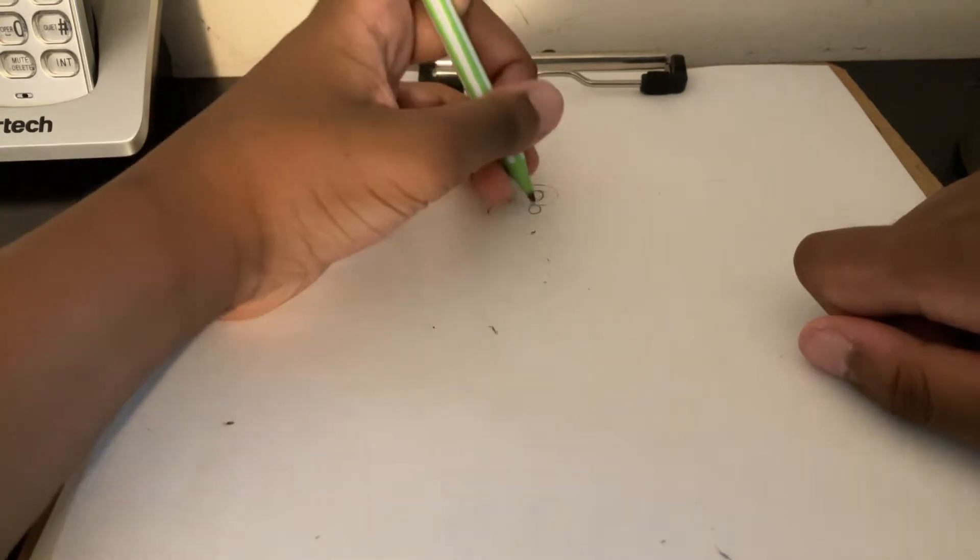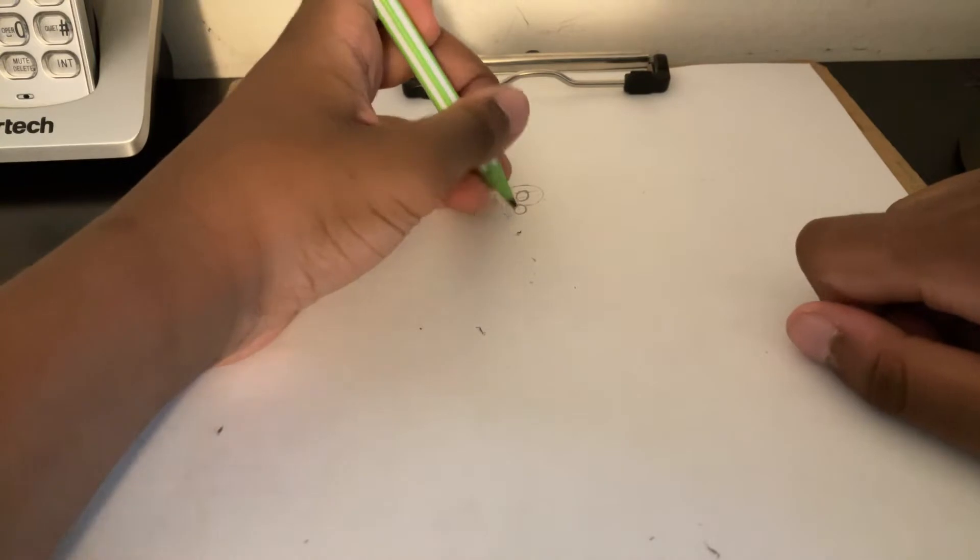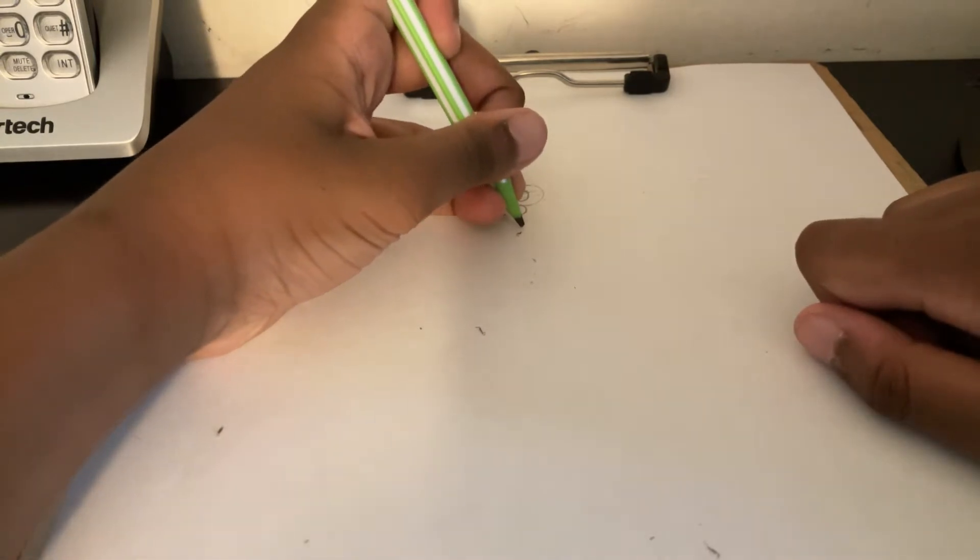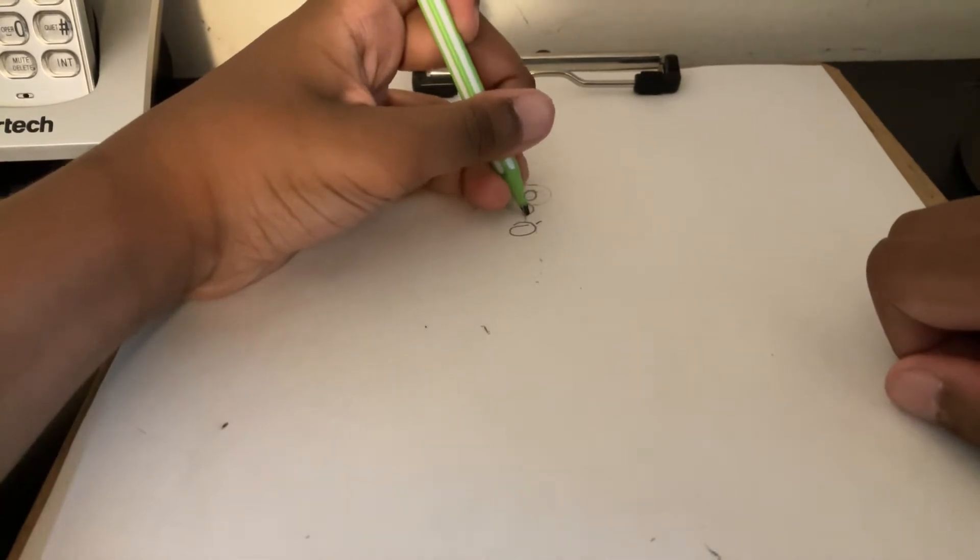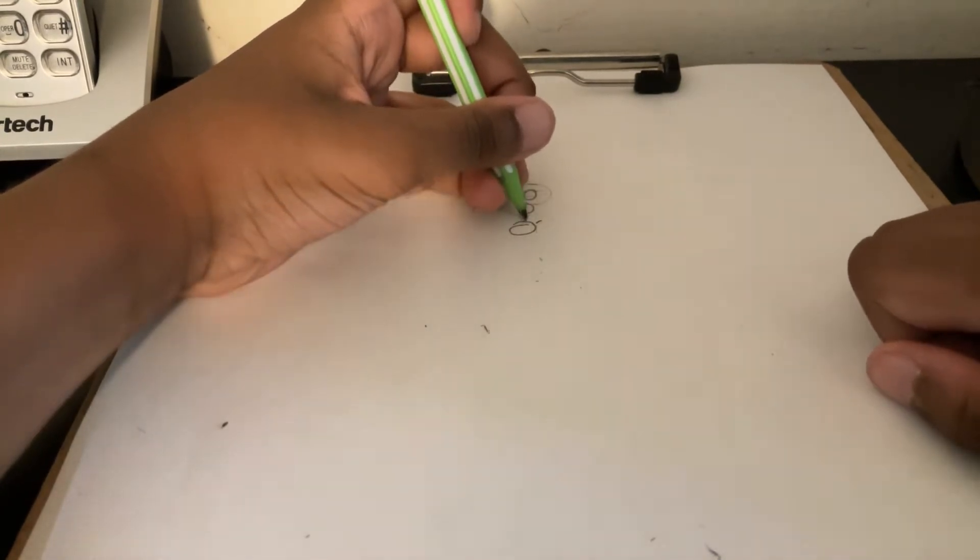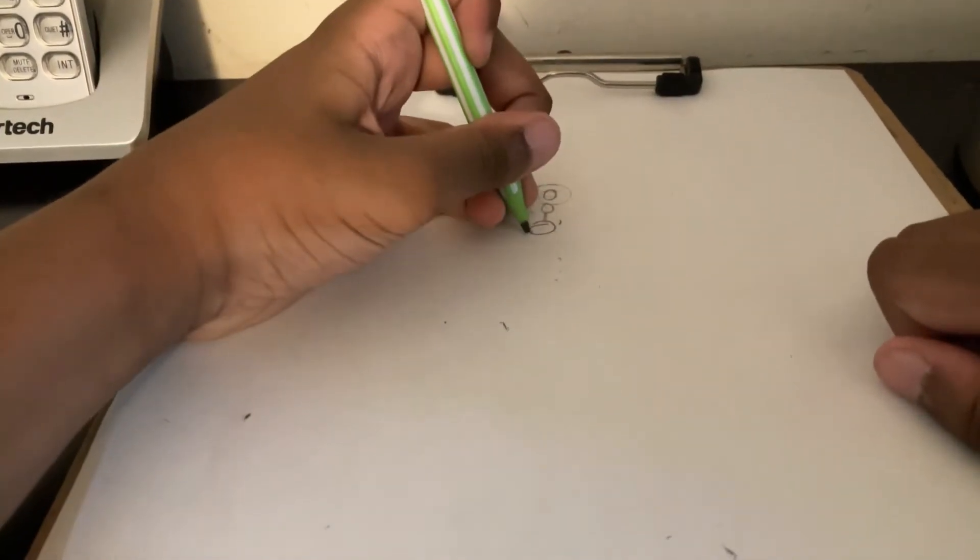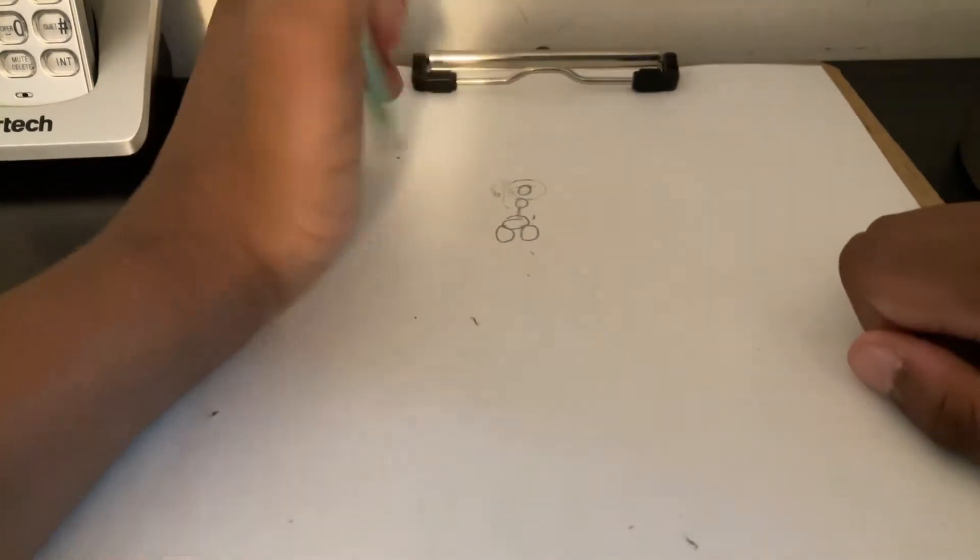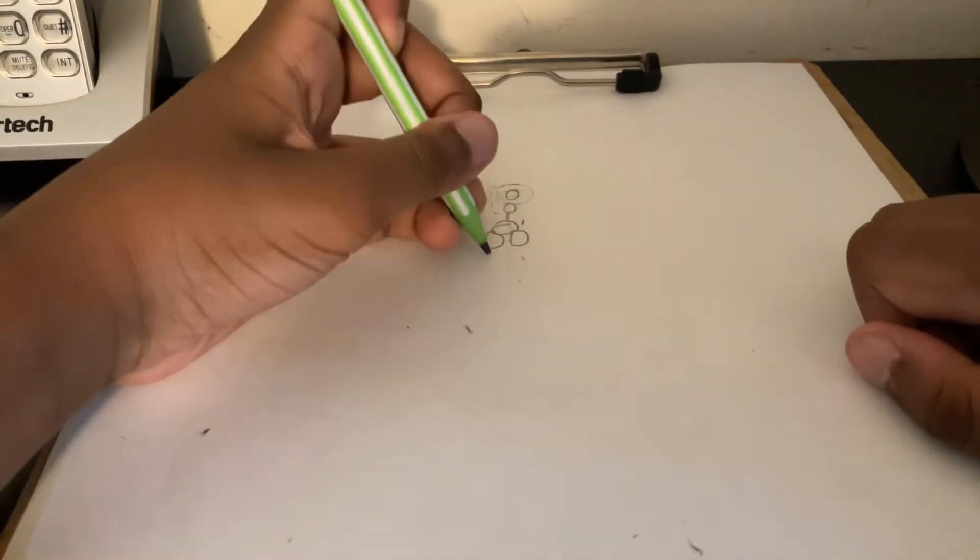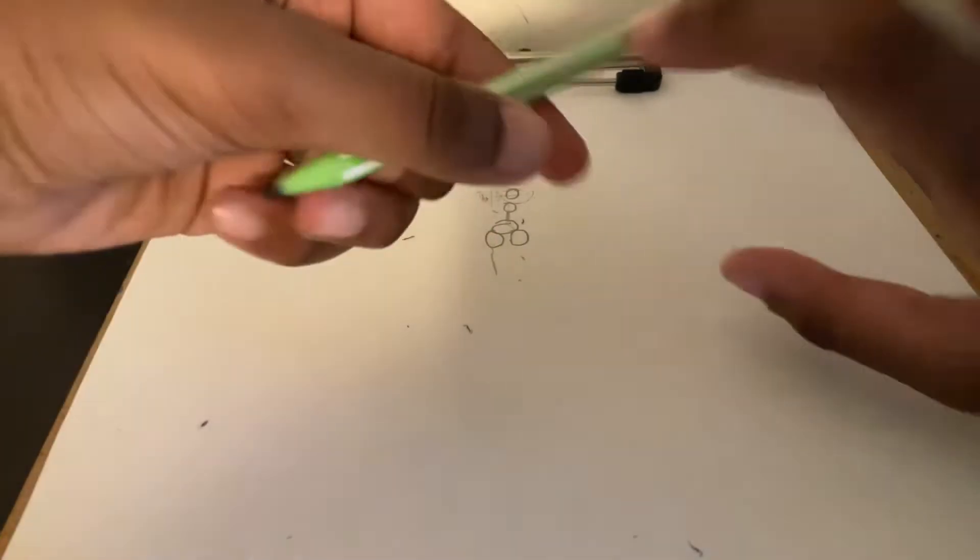So let's do this. You want to start the upper torso and the lower body. Now we go lower body. Tiny invisible lines. Now we want to think of the legs and add the feet.